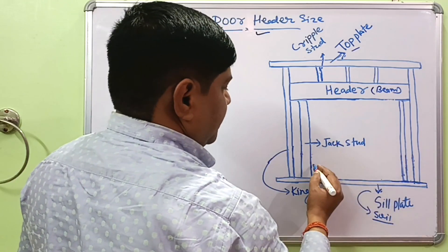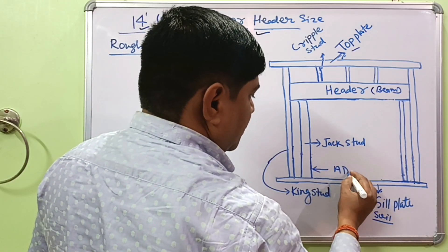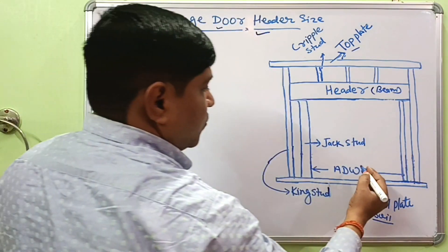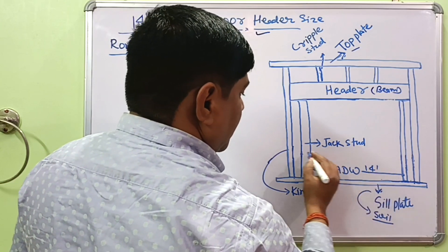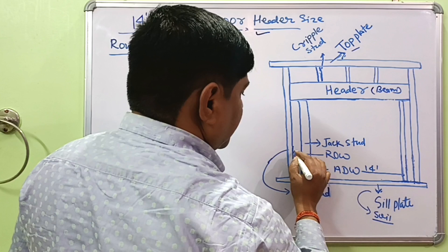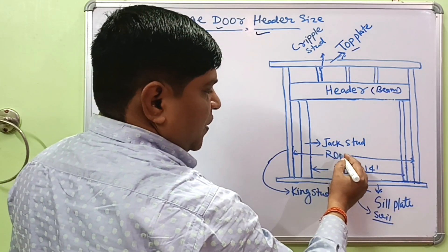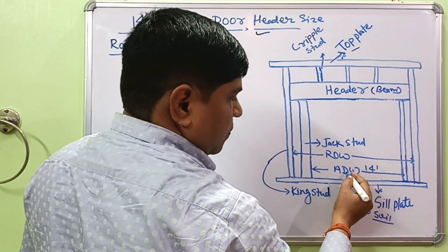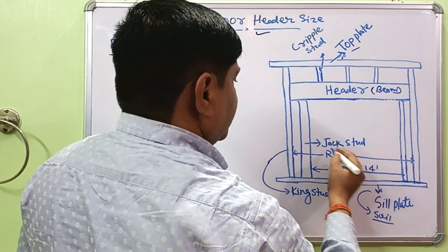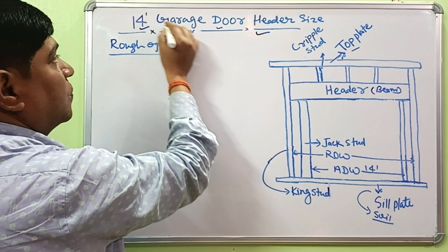If this is the actual door opening which is 14 feet, how do you define the rough opening width? The rough opening width is the actual door width plus additional space. To find the rough opening for a 14-foot garage door, first the actual door width is given as 14 feet.